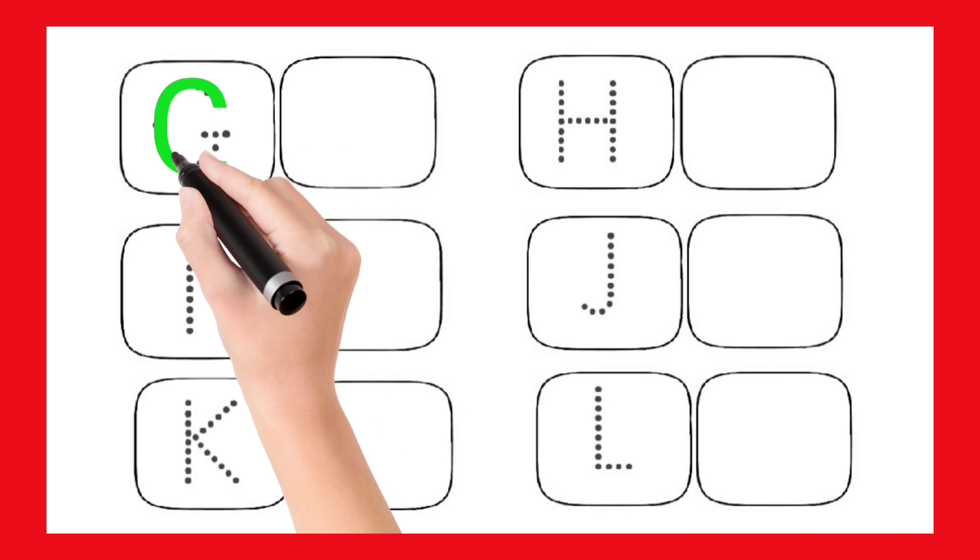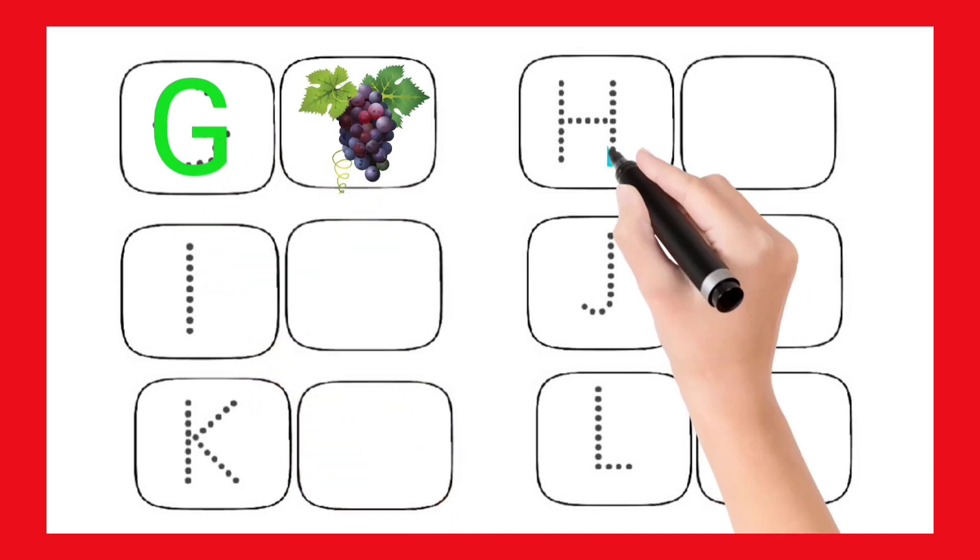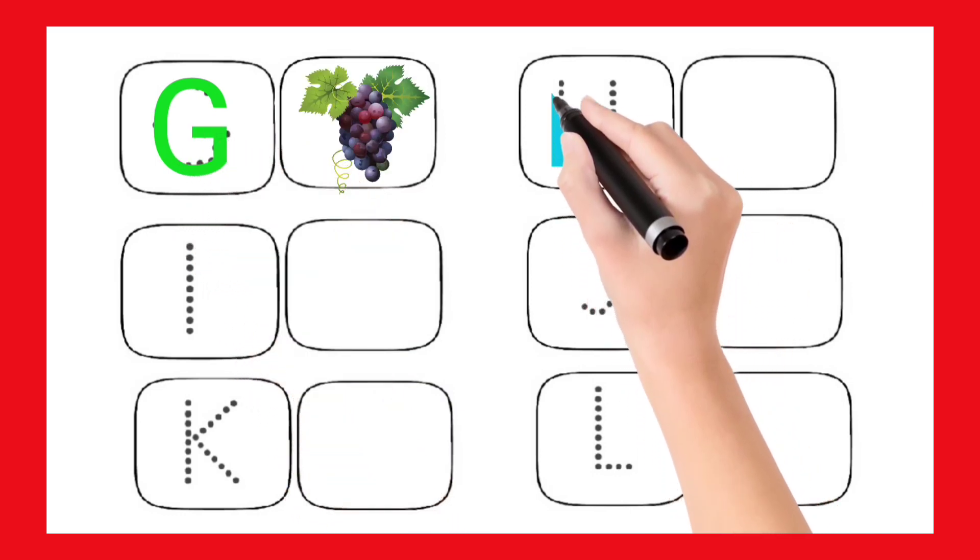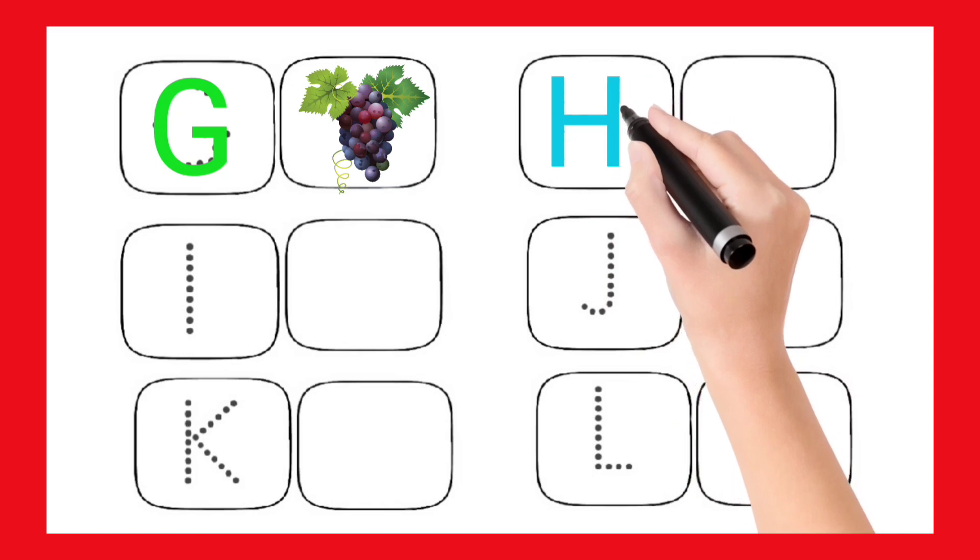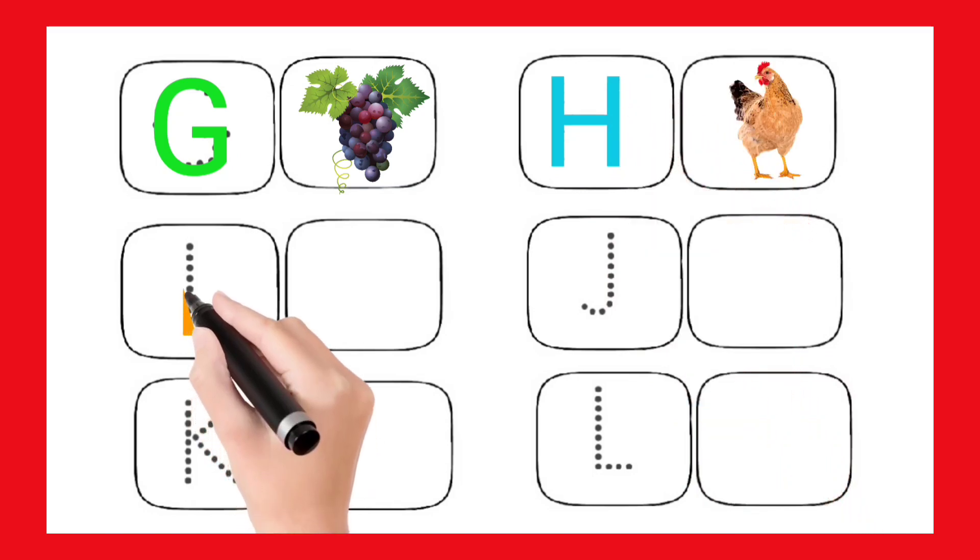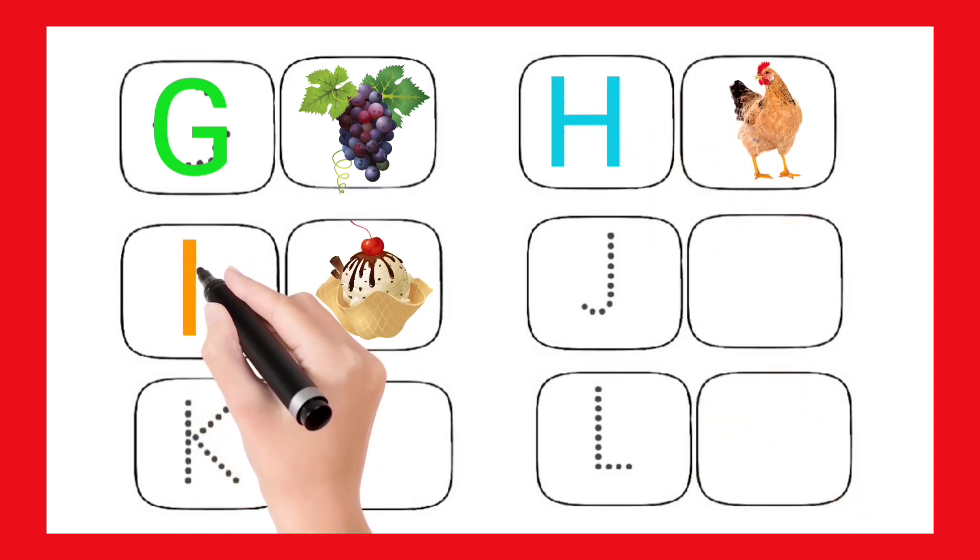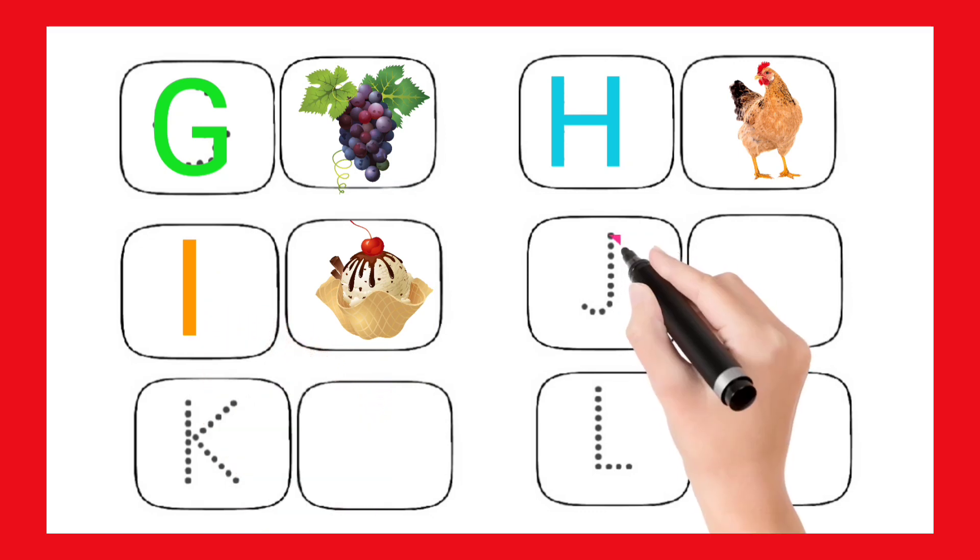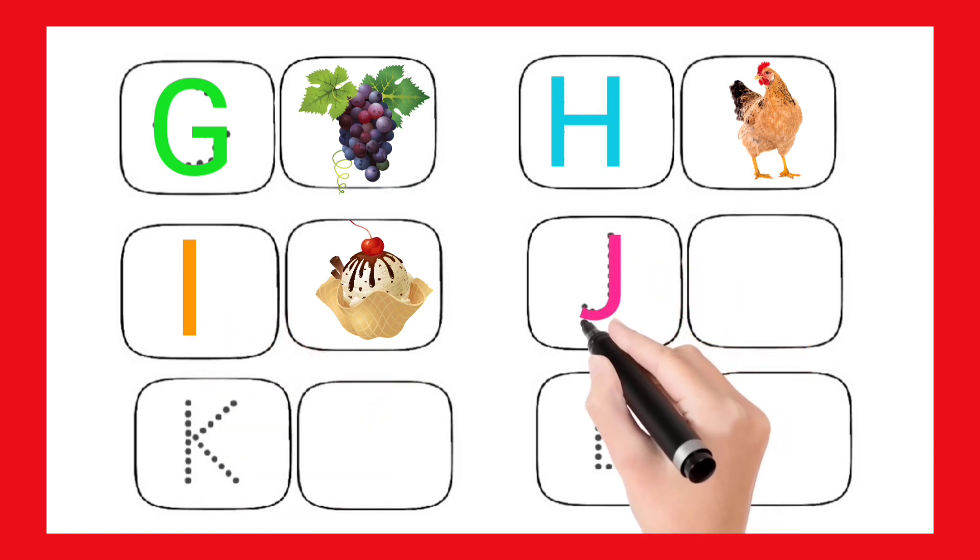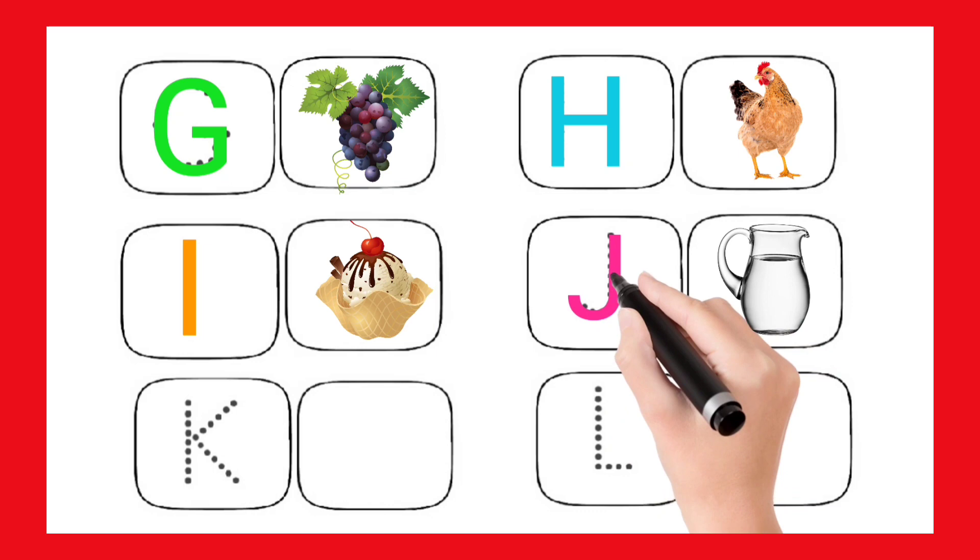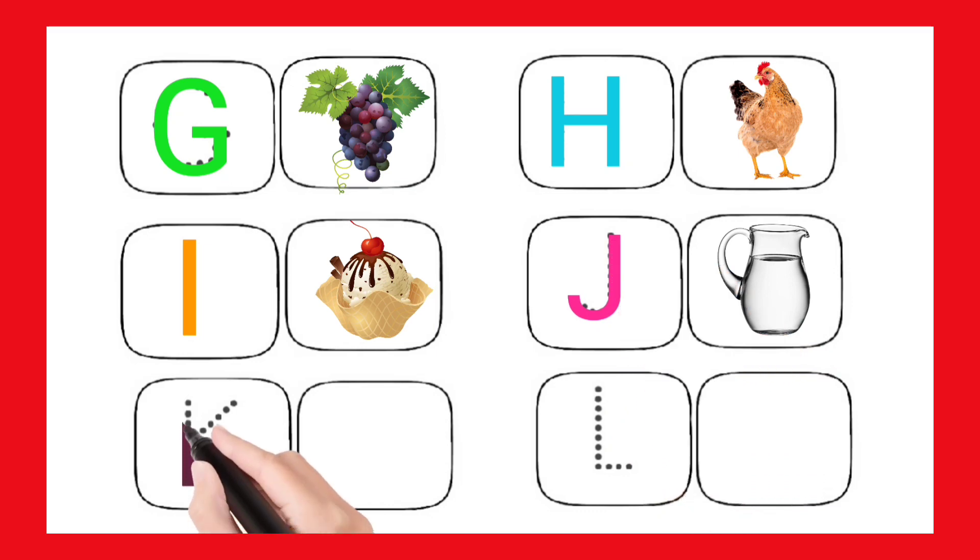G for Grapes. H. H for Hen. I. I for Ice Cream. J. J for Jug. K. K.